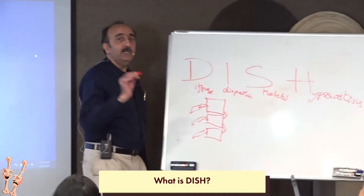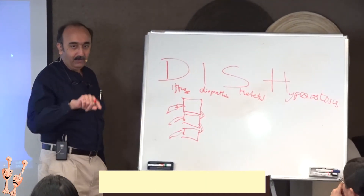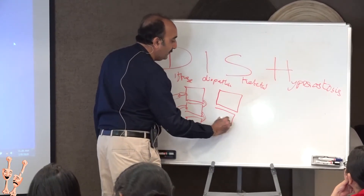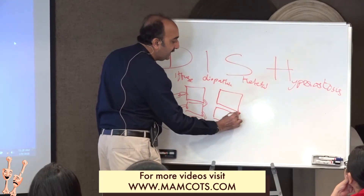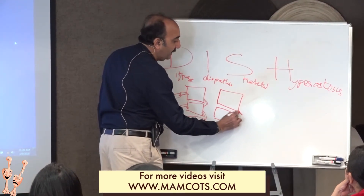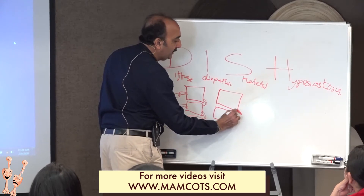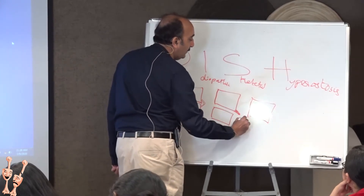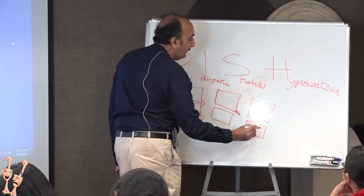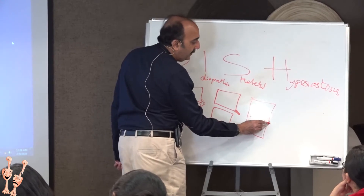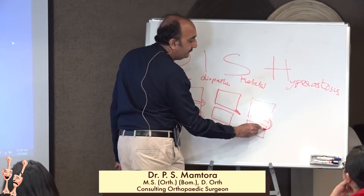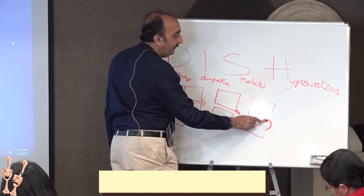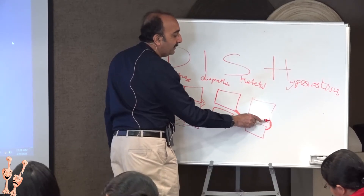These are not osteophytes. Coming to that question — how do you differentiate things? Osteophytes are new bones occurring parallel to the joint.